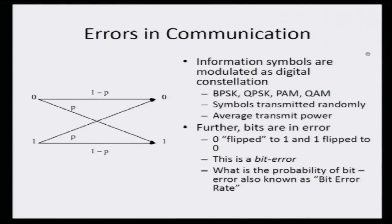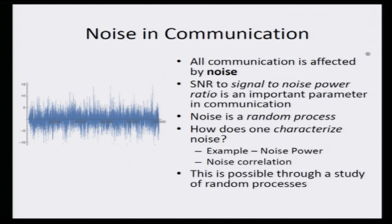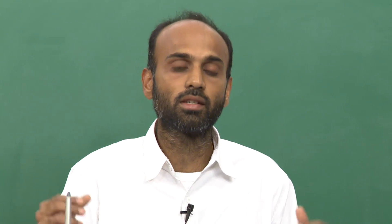Let us look at another interesting aspect: noise. Noise is very important in any communication system. The signal-to-noise power ratio at the receiver is an important metric to characterize performance, and this noise is a random process. Therefore, one would like to ask: what is the behavior of this noise? What is the average noise power? What is the correlation in the noise samples? To understand all these aspects, one needs to understand the properties and principles of random processes.